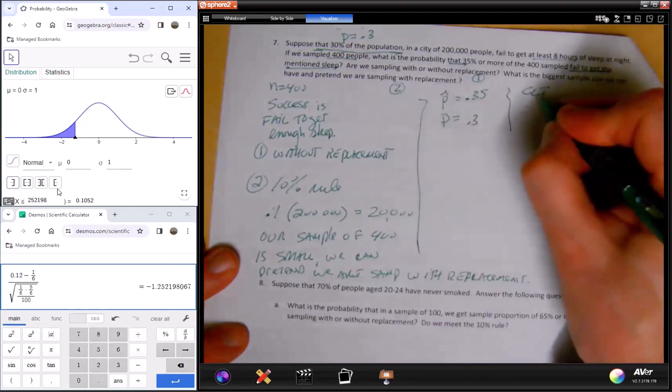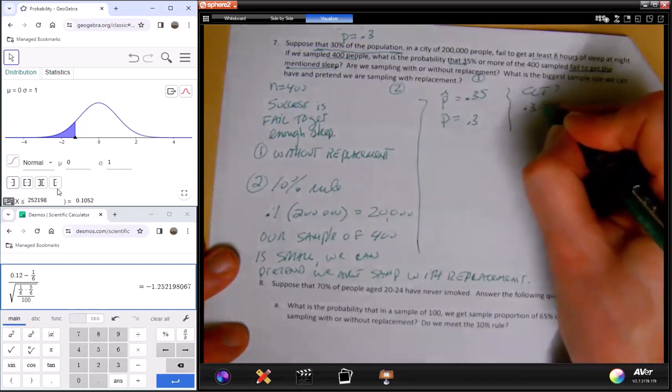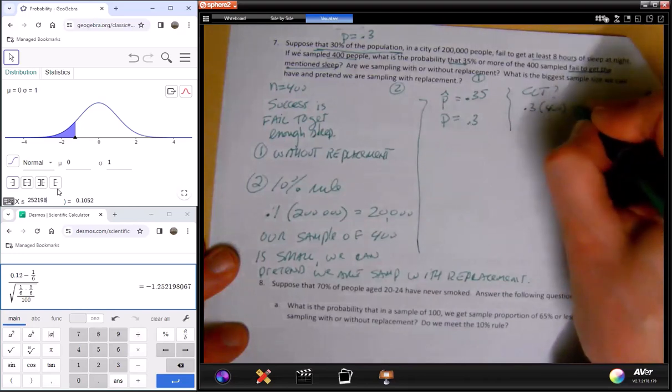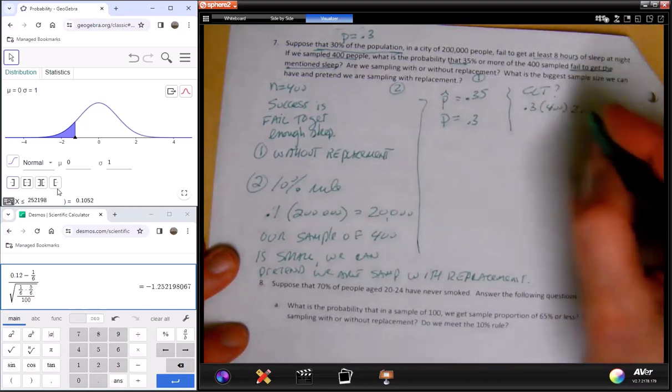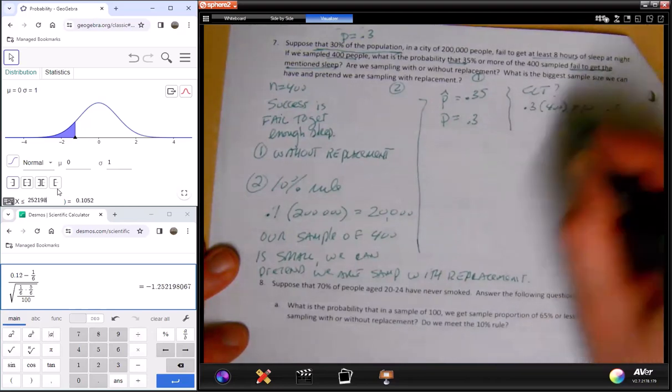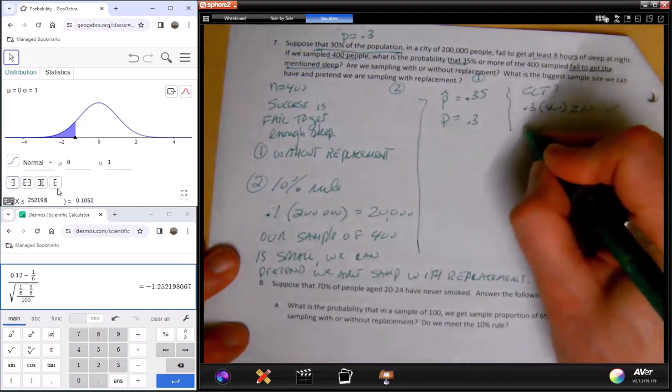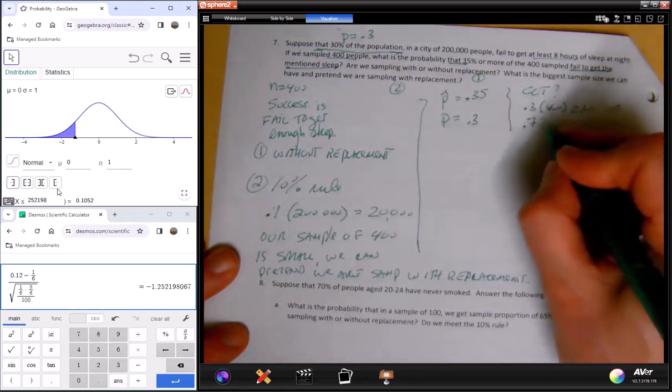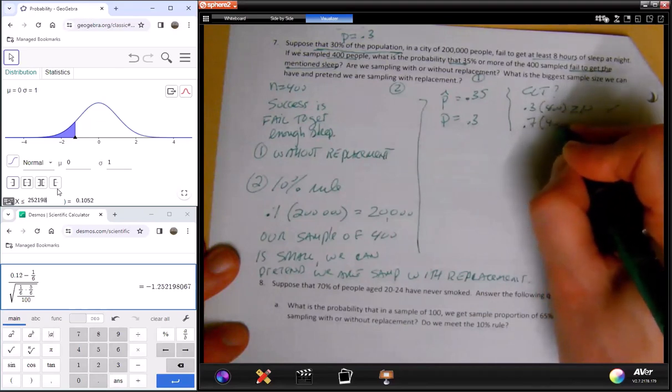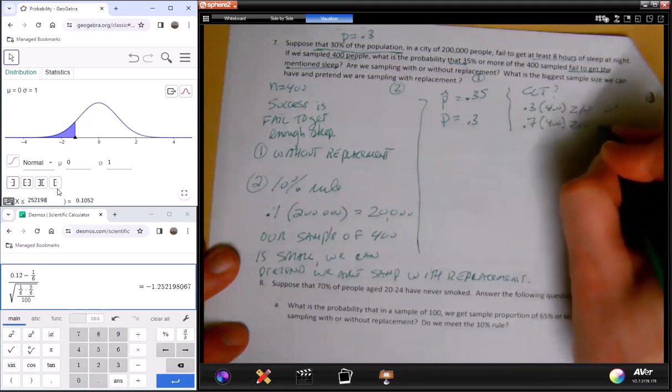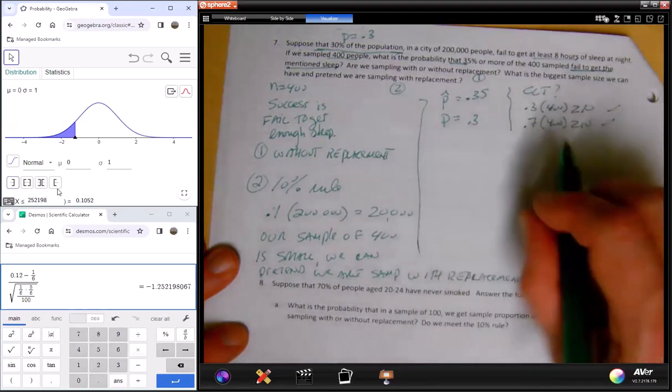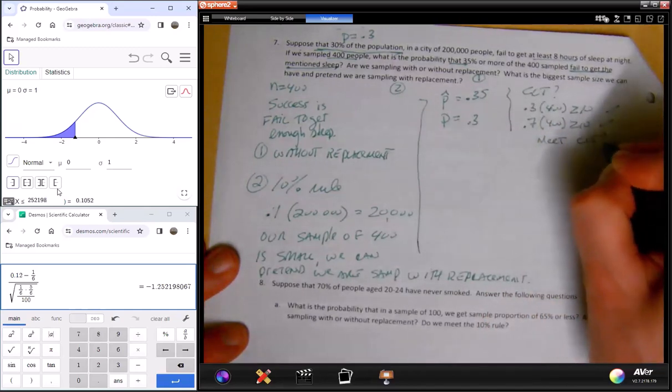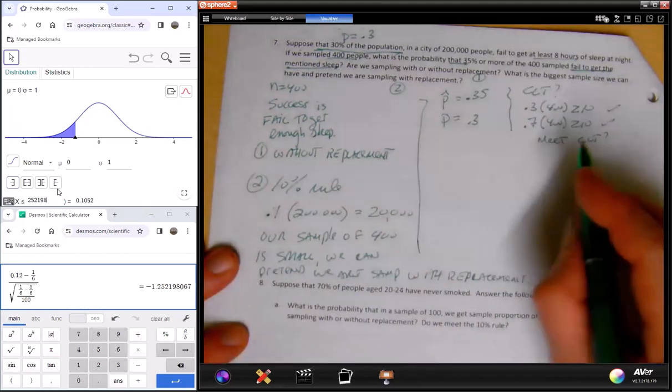Do we meet the CLT? We've met the 10% rule. CLT - well, let's find out. 30% of a sample size of 400 - is that greater than or equal to 10? And the answer is yeah, it's going to be - I can see what it is without calculating. 30% of 400 is bigger than 10 easily. And then failure would be, because these have to add up to 1, it's 1 minus this. 70% of 400 clearly is bigger than 10. I don't need to actually calculate it. We meet CLT. In other words, sample size is big enough. So now we're going to use a normal model.